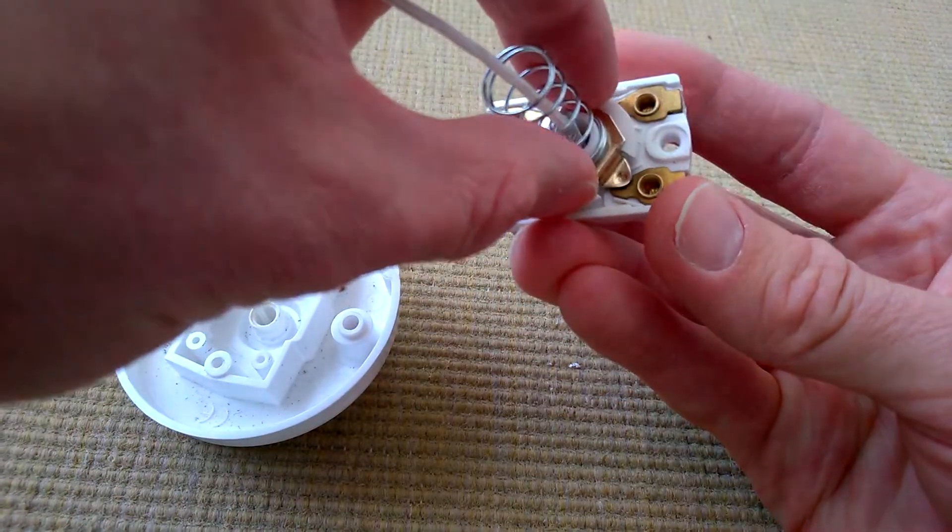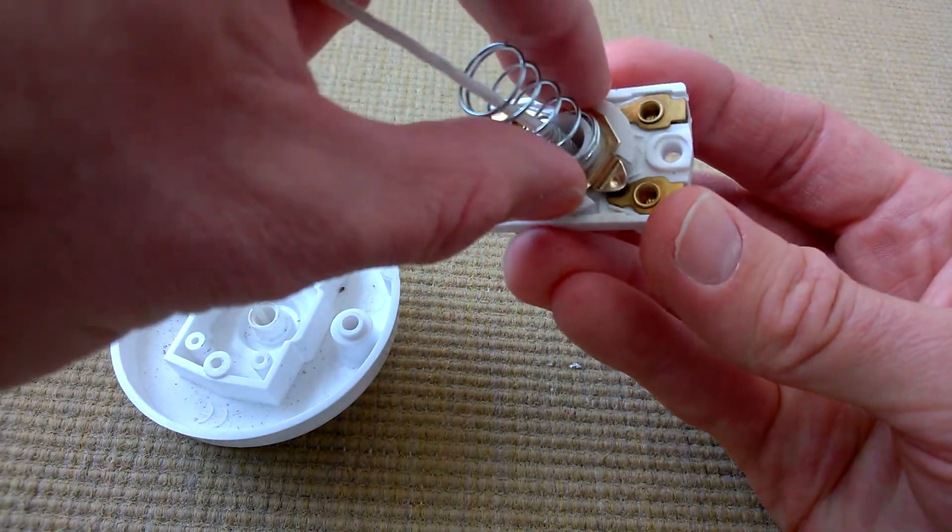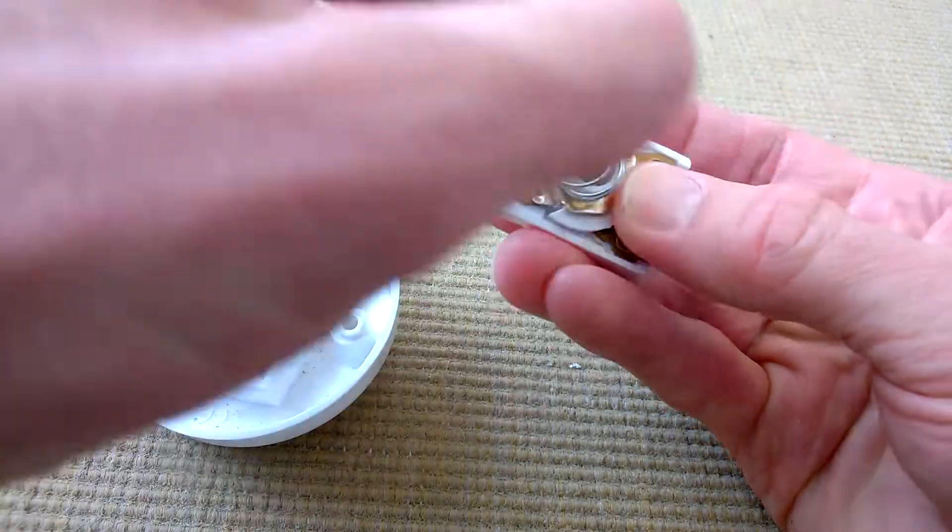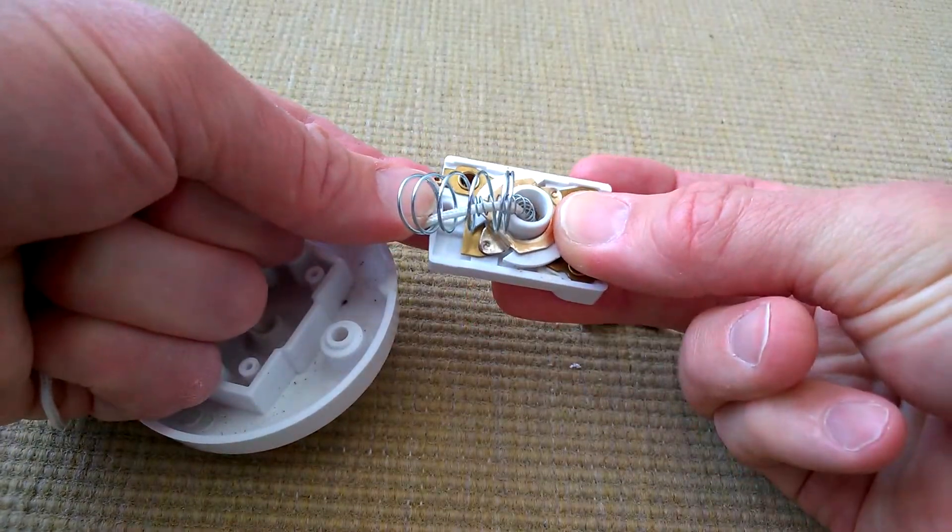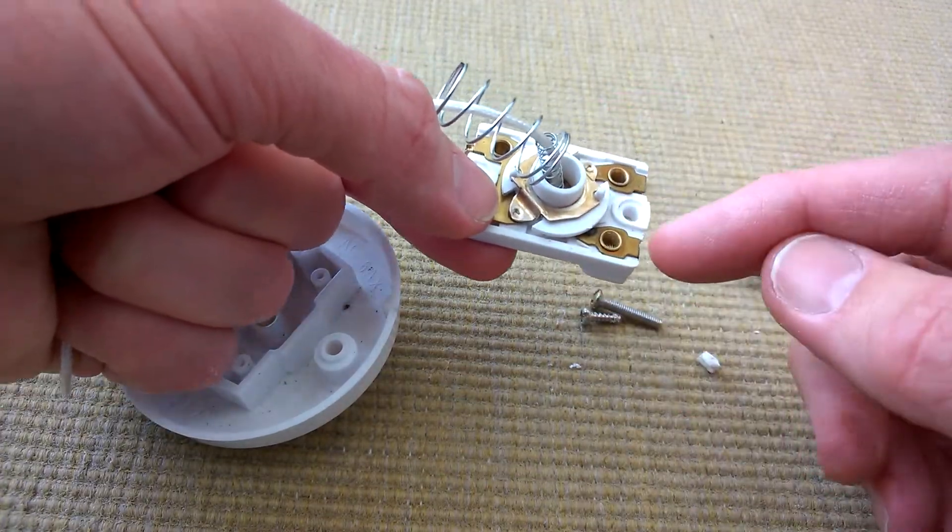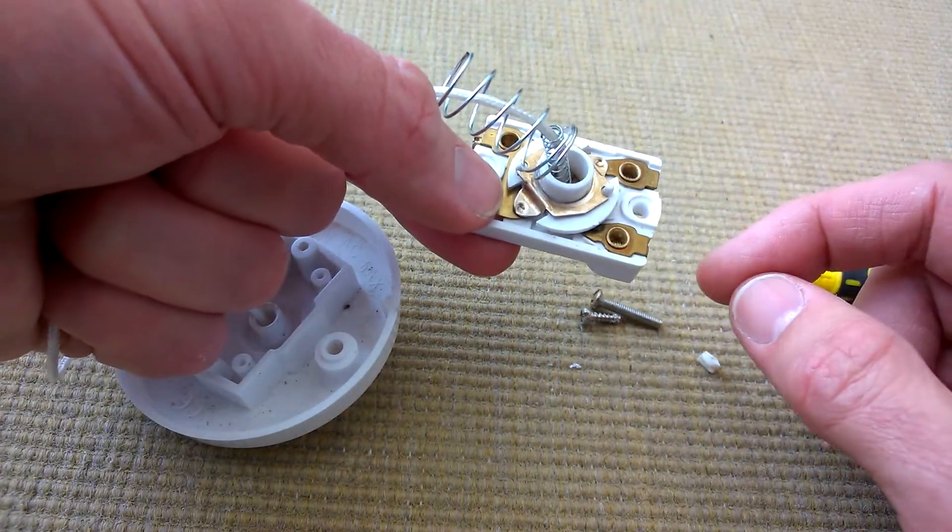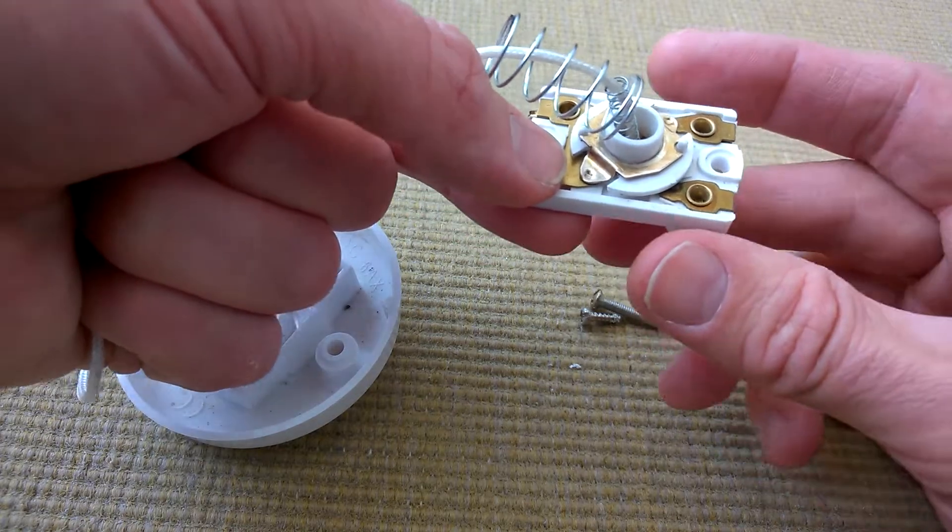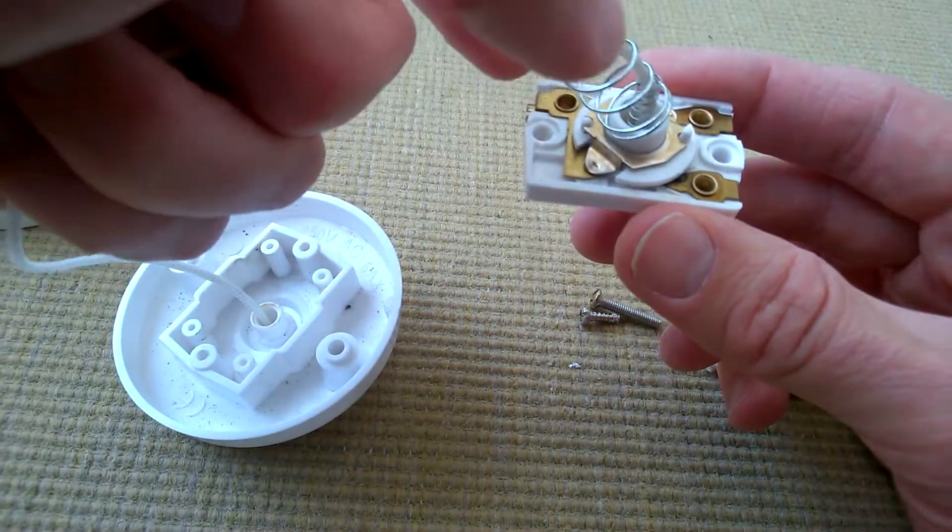So you can see the connection has been made from here all the way through to here. And when you switch it off, you're doing this motion. And then that breaks the contact as you can see there. So electricity cannot flow from here to here. So yeah, a bit more to it than I thought.